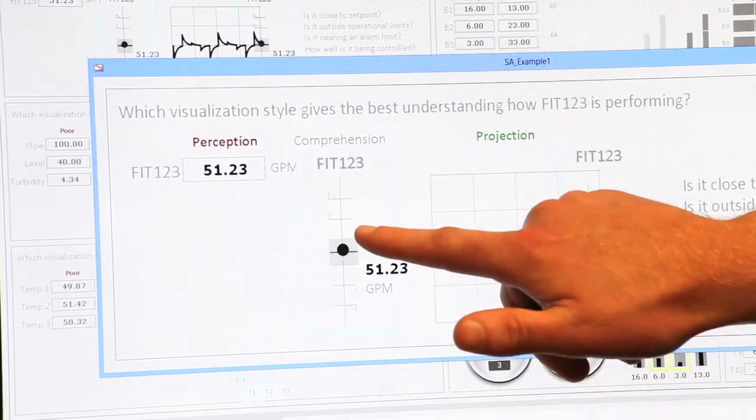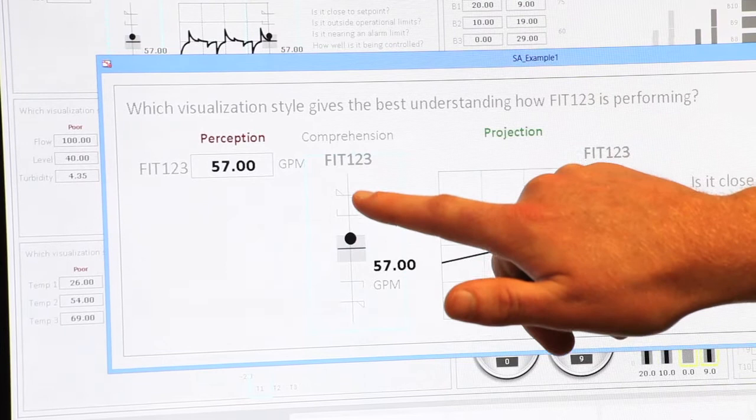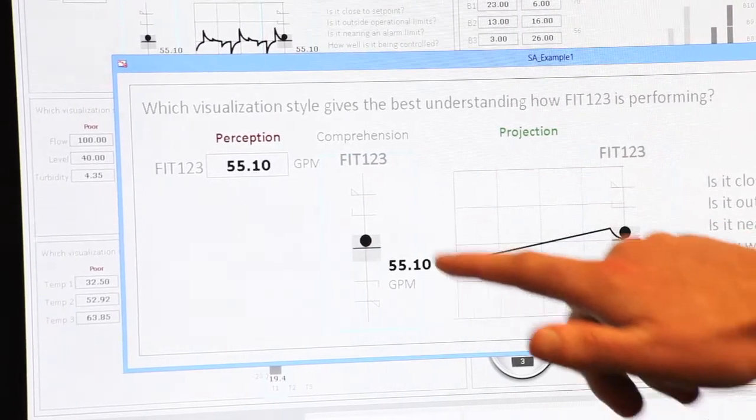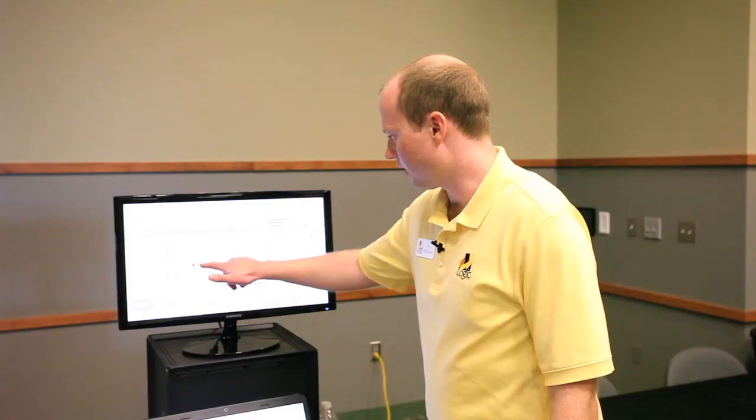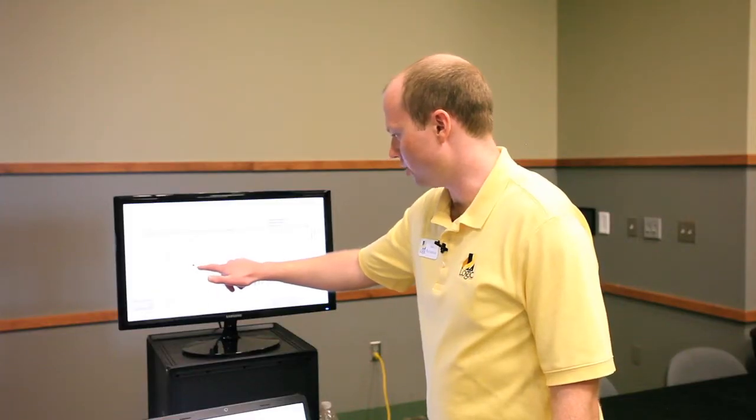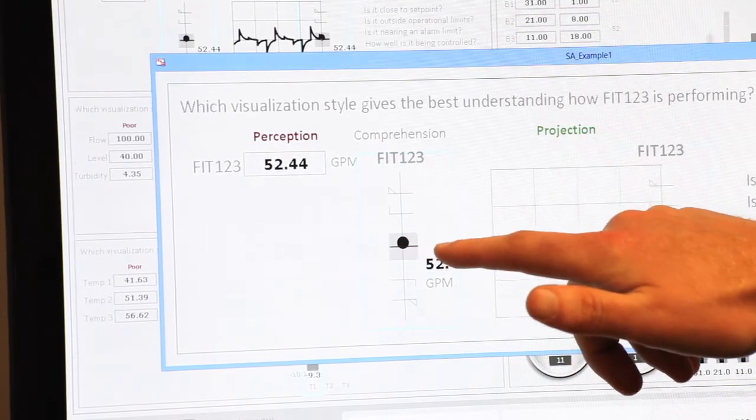Here we see a low alarm limit and a high, high alarm limit. The shaded area is the normal operating range. The target line is what we're shooting for and the circle is our process value.